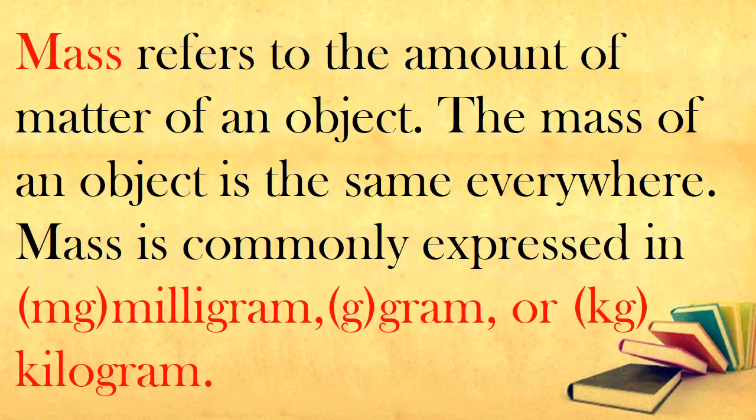Mass refers to the amount of matter of an object. The mass of an object is the same everywhere. Mass is commonly expressed in mg for milligram, g for gram, or kg for kilogram.